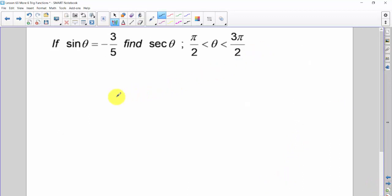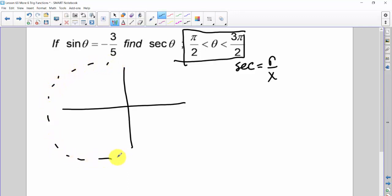So this problem's a little bit different. They tell us the sine of theta is equal to negative 3 fifths. They want us to find the secant of theta. We know secant is equal to r over x. But they're telling us where this angle is. And this angle is between π over 2 and 3π over 2, which means I'm somewhere in this region here. So if I want negative sine, I have to be in this quadrant down here because a y value, which is sine y over r, gives me negative. That means the y has to be negative because r will never be negative.